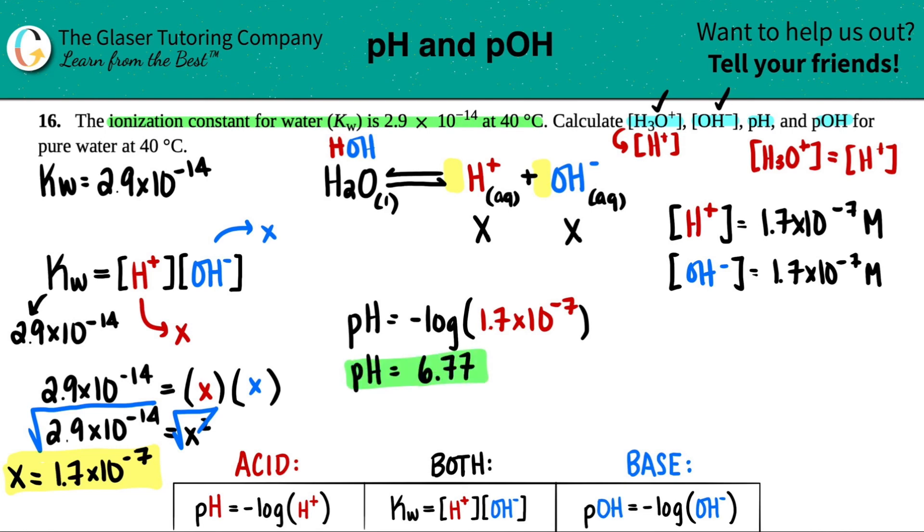We found the pH, now we just got to do the same for the pOH. OH goes with OH, so pOH = -log of the OH- which is the same number, so do we really need to do the math again? No, but I'm writing it down to show you since we're just getting our feet wet with these formulas. This would also be 6.77. So we have our pH, our pOH, and our H3O+ and OH-. There are our four answers.